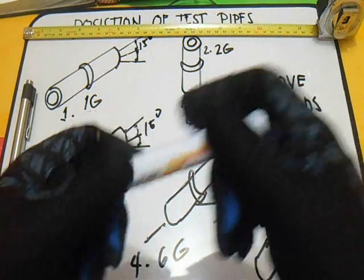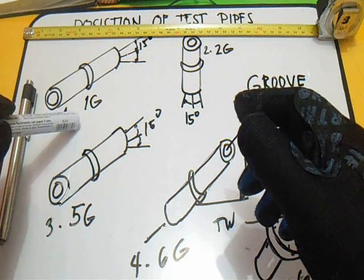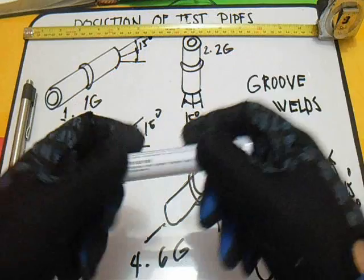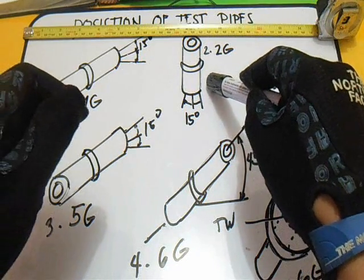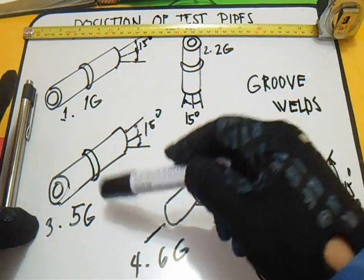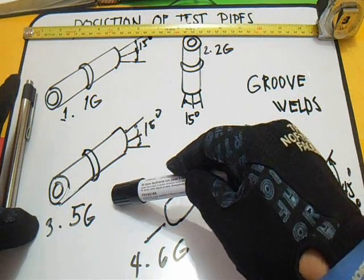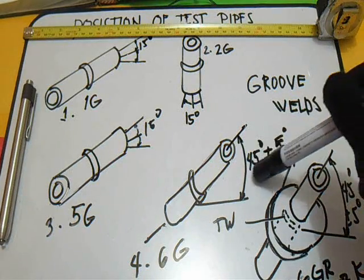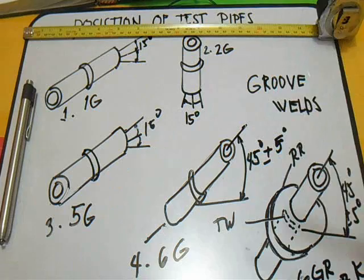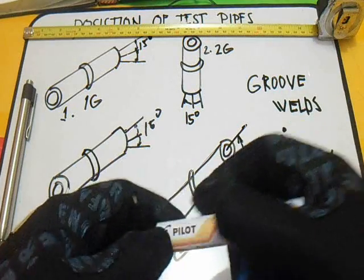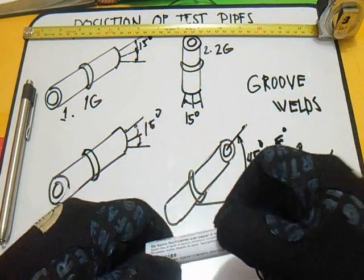Let's review: 1G is horizontal and rotated. 2G is vertical and not rotated. 5G is horizontal and not rotated. 6G is not rotated, at 45 degrees positive or negative 5 degrees. And 6GR is the T, Y, or K position at 45 degrees positive or negative 5 degrees.